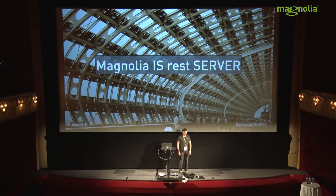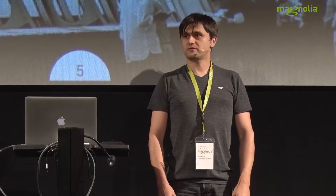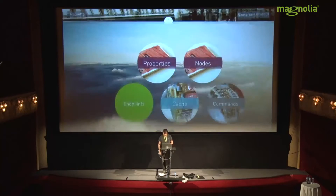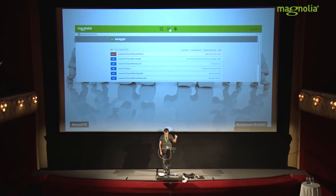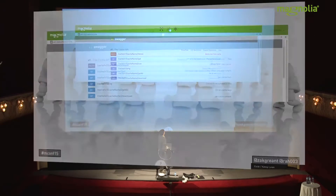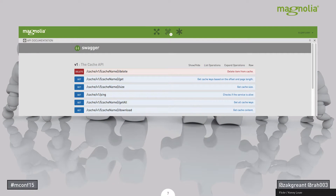Magnolia is a REST server. How many of you know that? How many of you use any of the Magnolia REST services out of the box? There are a number of REST endpoints you can use. We keep adding more, like this one for cache. You saw the cache browser yesterday — it took only about six methods to make it all work. You don't need to expose much if you design it right.